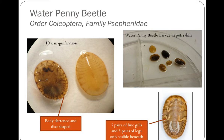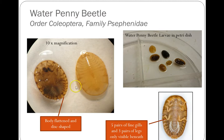Next we have the Water Penny beetle larva. Here's what they look like in a petri dish from eye level — they can be slightly different shades, but they're all basically a round, flattened disc. The streamlining really helps them suction to rocks in fast current and graze on the algae and biofilms on the rocks. Their legs, gills, and appendages are all tucked up underneath to create less drag in the water. That's the Water Penny beetle larva.